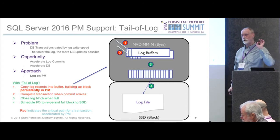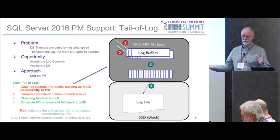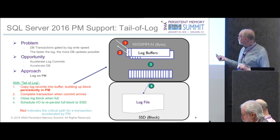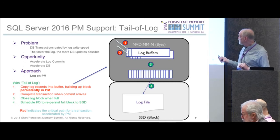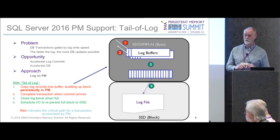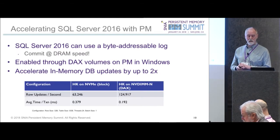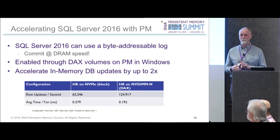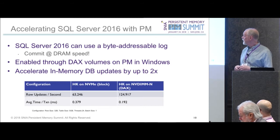The faster the log, the more database updates are possible — databases love low-latency storage. It turned out SQL didn't need to put the entire log in persistent memory; they just needed to accelerate the log commits, to make them safe quickly. They just needed to put them in a journal and get them safe. Their approach is the Log-on-NVMM, called Tail of Log. The performance-critical part does the write to a region and waits for the receive, then lazily builds the full log. SQL Server only needs 20-50 megabytes of PM to accelerate this.